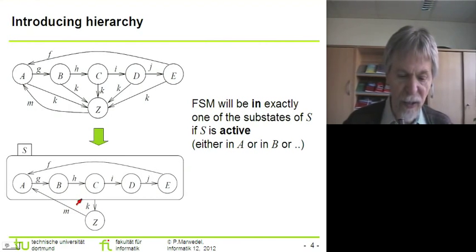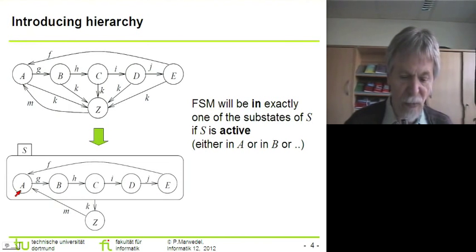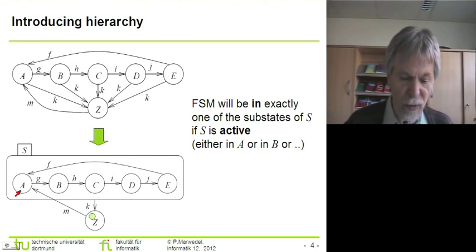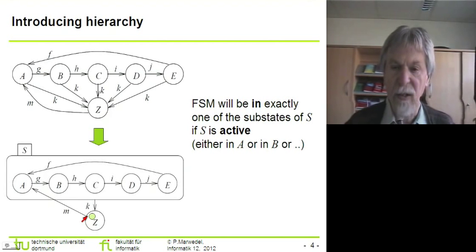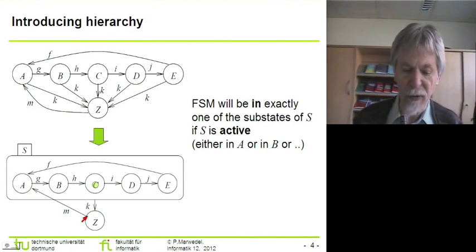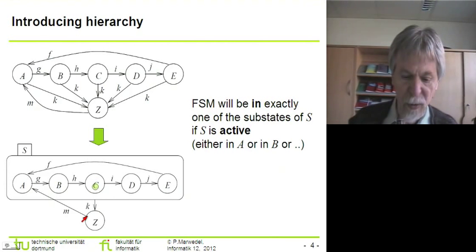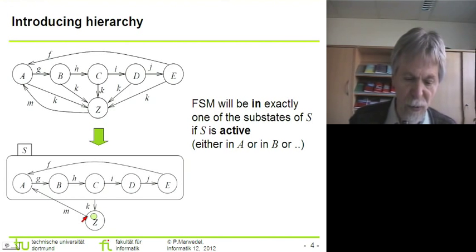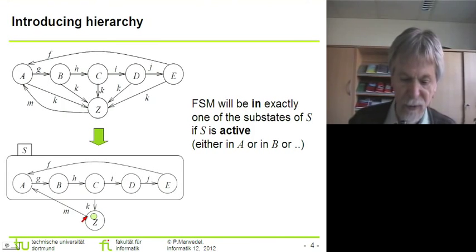The meaning is exactly the same, and it's much easier to denote the transition taken in the case of an exception such as K. Now, the super state S includes all substates A to E. Looking at the terminology needed when we discuss state charts: all the states in which we are at a particular point in time are called the set of active states. States that don't have any sub states — like A to E — are called basic states. States that do include sub states, like S, are called super states.